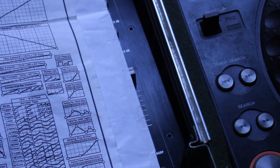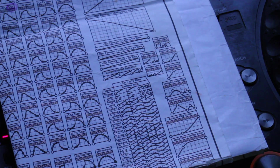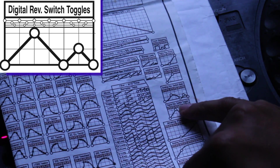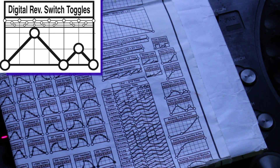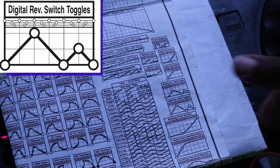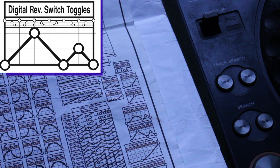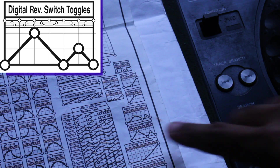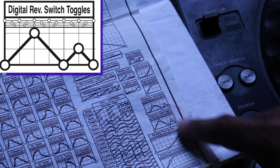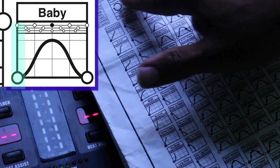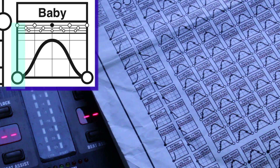We'll zoom in a little bit so we can see this more clearly. This is a digital reverse switch toggling. It seems like a baby scratch but it doesn't have the same sound as a baby scratch, because this is just forward and reverse toggling versus an actual baby scratch, which has nice smooth round lines.